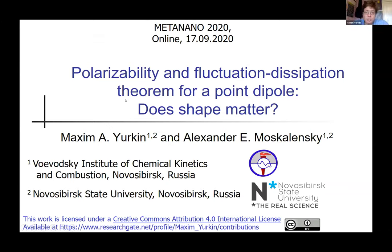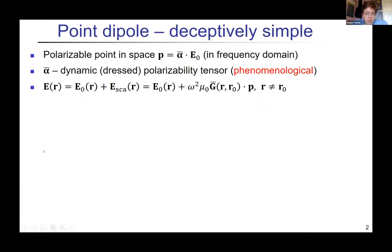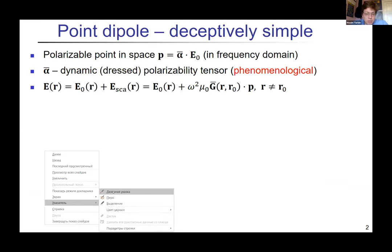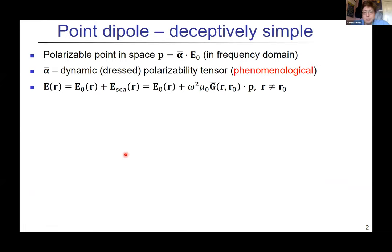I will be talking about point dipole and fluctuation dissipation theorem. The concept of point dipole is simple, but I would argue it's somewhat deceptively simple. I will be talking only about frequency domain. You have an incident field E₀ and the dipole moment is linearly related to it. I will everywhere use dynamic polarizability tensor α for general description, and in this description it's a phenomenological constant.